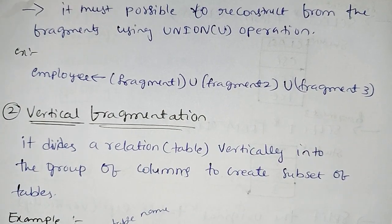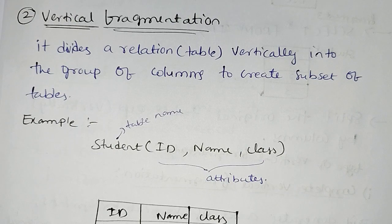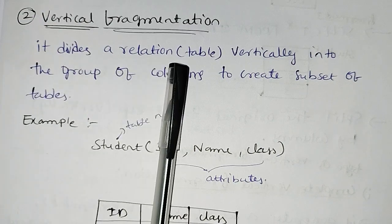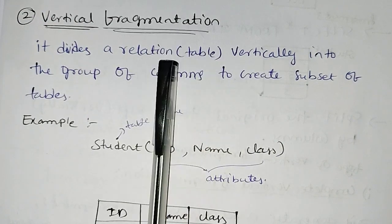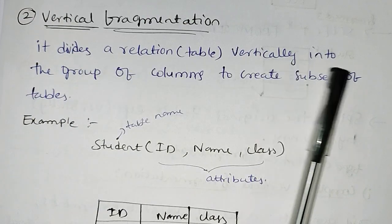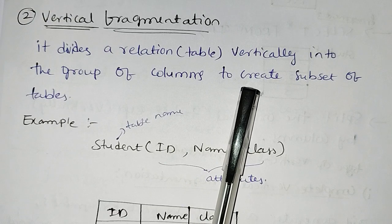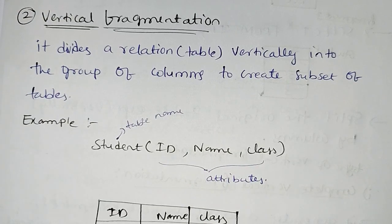Now we can do vertical fragmentations. Vertical fragmentation divides a table vertically into a group of columns to create a subset of a table.